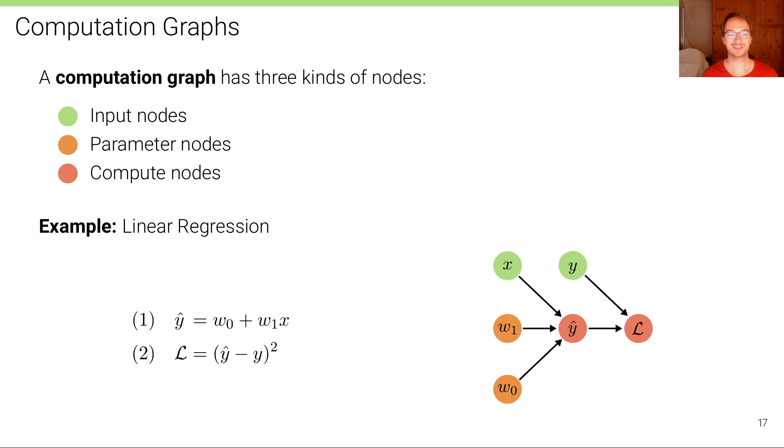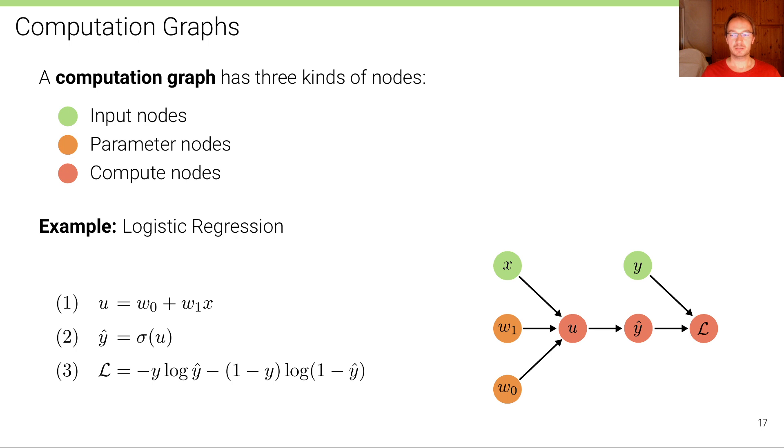Here's another example for logistic regression, where the input is first transformed into a variable u. So we have an affine transformation that takes x, w0, and w1 and computes u. Then we pass this u through a non-linearity sigma function here. Again, this could be decomposed into individual operations; we have just summarized it here as a sigma function because it's not too complex as an operation. This produces the assignment of y hat. Then we have this loss function, which is the binary cross entropy loss that compares y hat with the true label y.